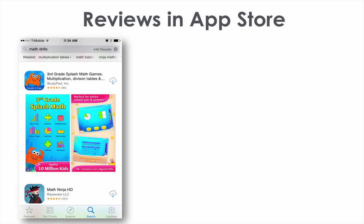So what do we see here? We see that this application, Third Grade Splash Math Games, has ratings on the top. You can see that it's about four and a half stars on average out of five, which is very good, and it has 84 ratings. So the more ratings and reviews you have that are visible on the outside, it tells users that your app is pretty good, especially if the ratings are high.